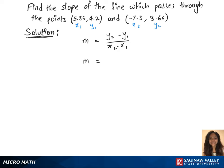Let's plug in the points in the formula. y2 is 3.66 minus y1 is 4.2 over x2 is -7.3 minus x1 is 5.35.